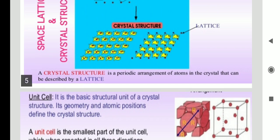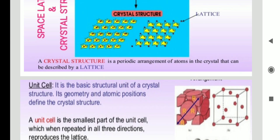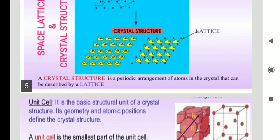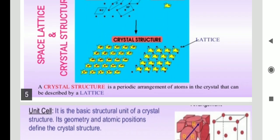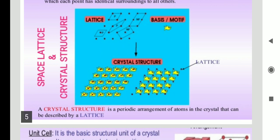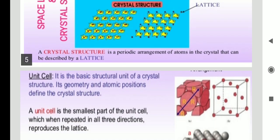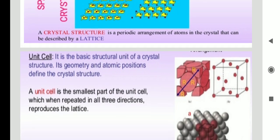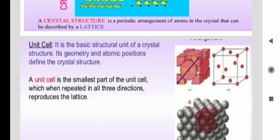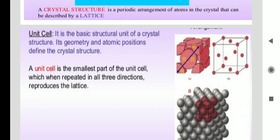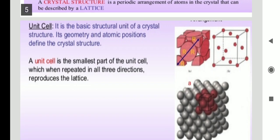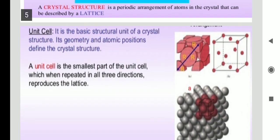A crystal structure is a periodic arrangement of atoms in the crystal that can be described by a lattice. Simply put, lattice plus basis equals crystal structure. In a crystal structure, the fundamental characteristic is the unit cell. The unit cell is the smallest block or part in a crystal structure.